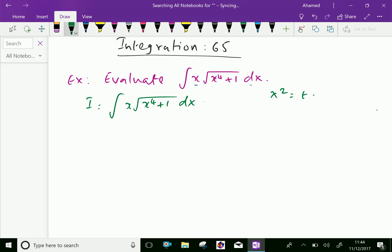Put x squared equal to t, differentiate both sides. We get 2x dx equals dt, then x dx equals dt over 2.